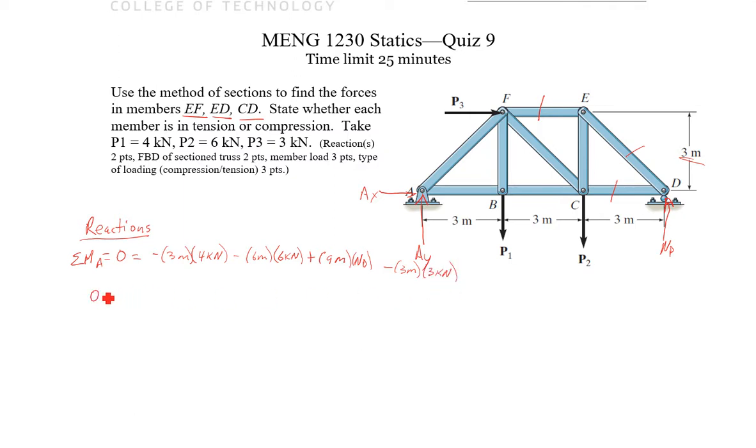So I get zero equals negative 12 kilonewton meters, minus 36 kilonewton meters, plus 9 meters ND, minus 9 kilonewton meters. So I get 48, 54, 54 divided by 9, so I get 9 ND equals 54 kilonewton meters. So ND is 6, not 54, excuse me, that's 48, 57, 6.33 kilonewtons.